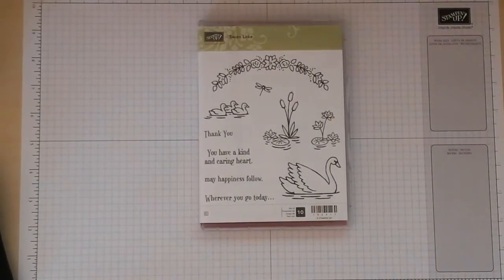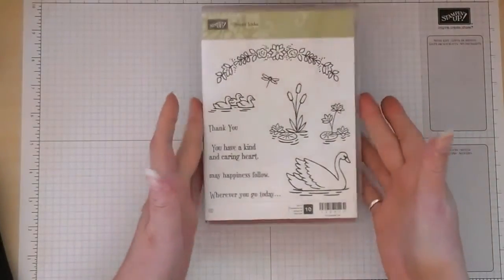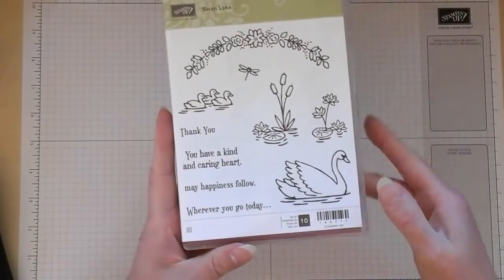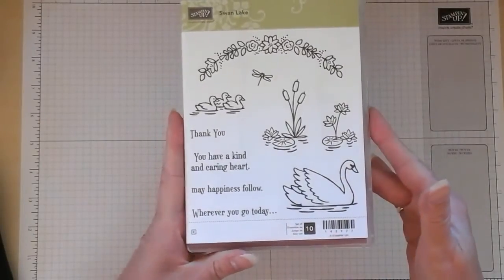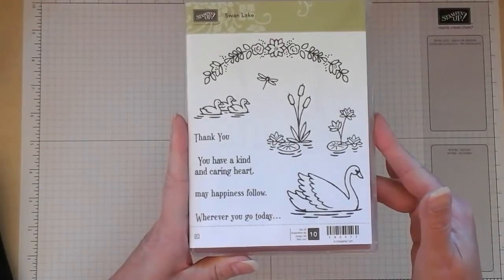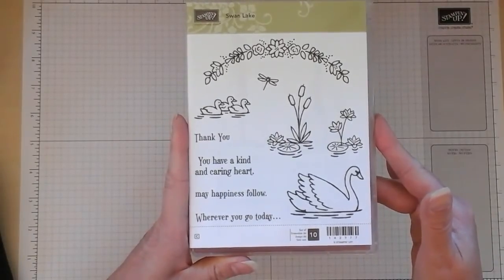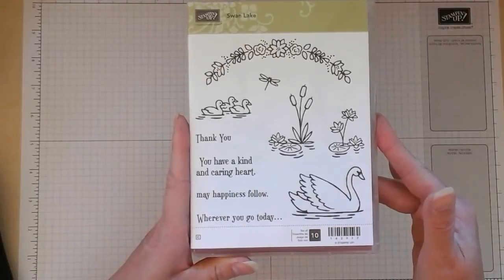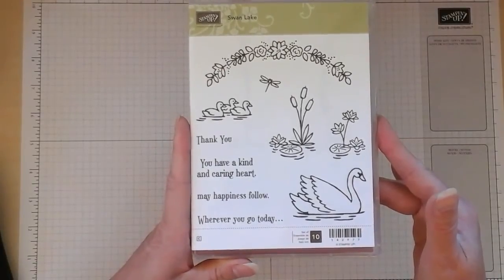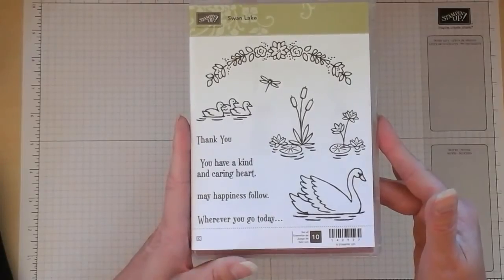For today's Watch On Wednesday project I want to show you a very quick and easy thank you card made using this Swan Lake stamp set which is in the 2017-2018 annual catalogue. It was actually first released at the beginning of the year in the 2017 occasions catalogue and I'm very pleased to say that it is carrying over into the new one.